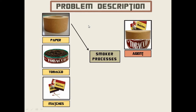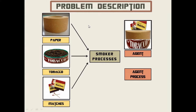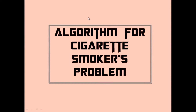In the problem description we have three smoker processes: paper, tobacco, and matches, and we have one agent process which consists of an infinite supply of all three ingredients.